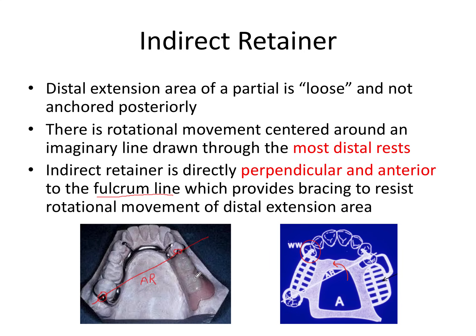The patient doesn't want to deal with that rotational movement, so we place an indirect retainer to help with retention of the partial that has a distal extension. We take this axis of rotation, draw a line perpendicular and anterior to it, and that's a perfect location to have an indirect retainer. The indirect retainer is most of the time — nine times out of ten or more — a rest, and so the rest on this first premolar or canine area is the indirect retainer for this partial.